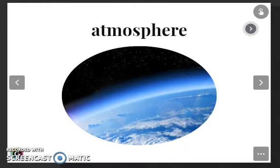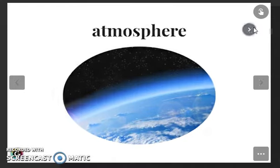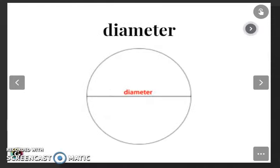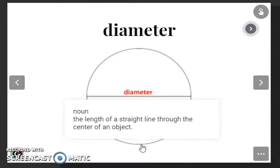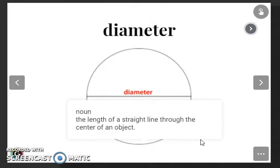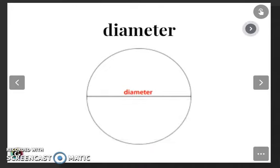Our next word is diameter. Listen and repeat: diameter. The length of a straight line through the center of an object. There you have it in the middle of the circle.